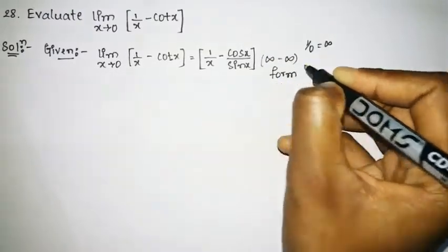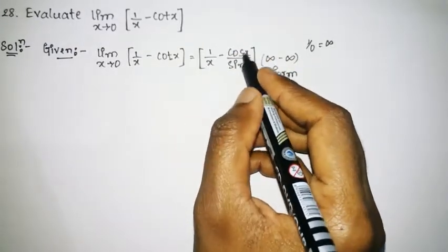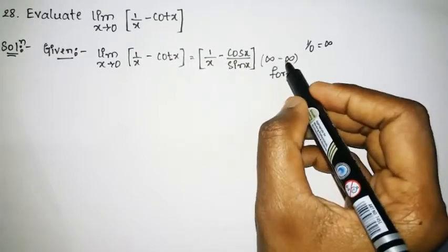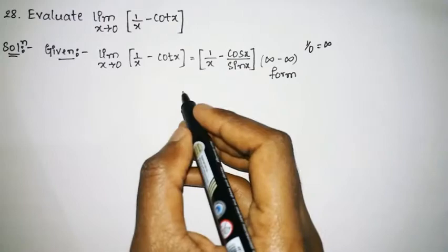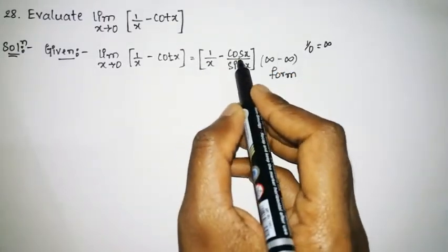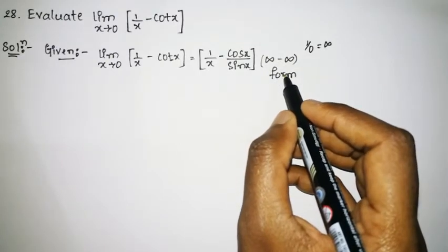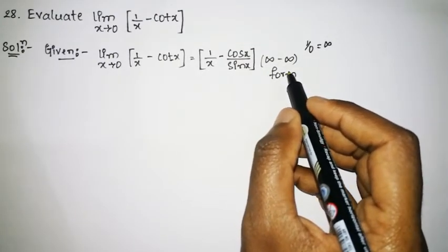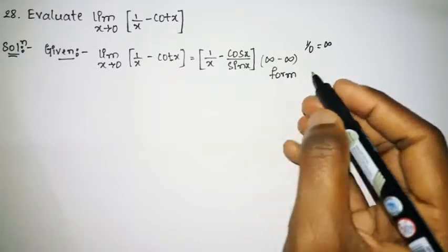In order to handle the infinity minus infinity form, we rearrange, writing cot x as cos x divided by sin x. Whenever we have this form, we need to find the LCM on both sides and convert it into either 0 by 0 form or infinity by infinity form, then apply L'Hôpital's rule to obtain the result.